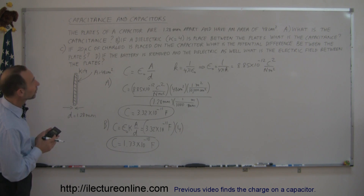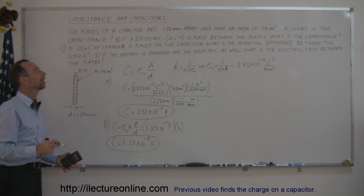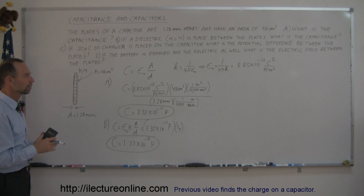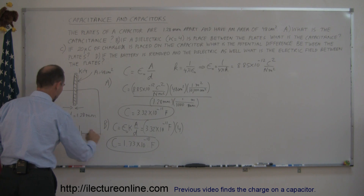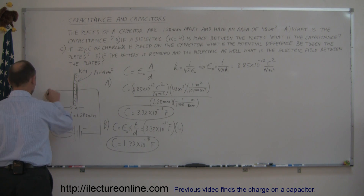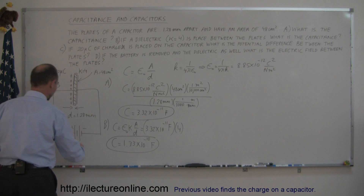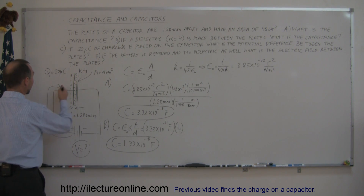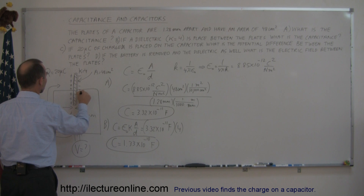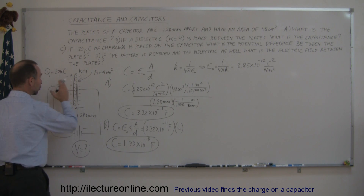For Part C: if 20 microcoulombs of charge is placed on the capacitor, what is the potential difference between the plates? We connect a battery to push charge onto the capacitor. The charge Q equals 20 microcoulombs. Once the capacitor is fully charged, the potential difference across its plates equals the potential difference of the battery.